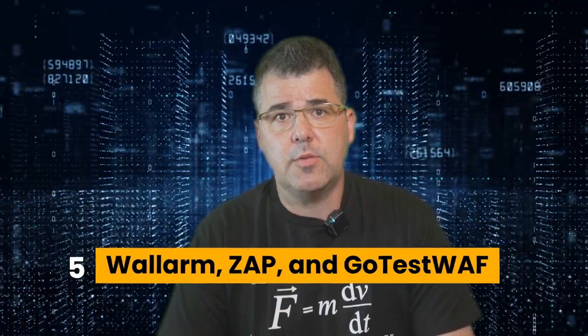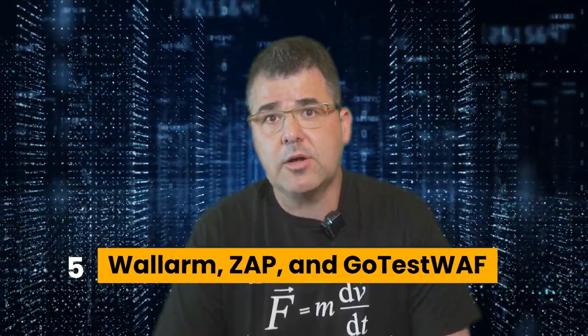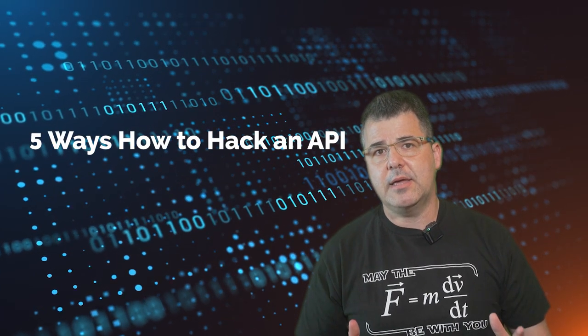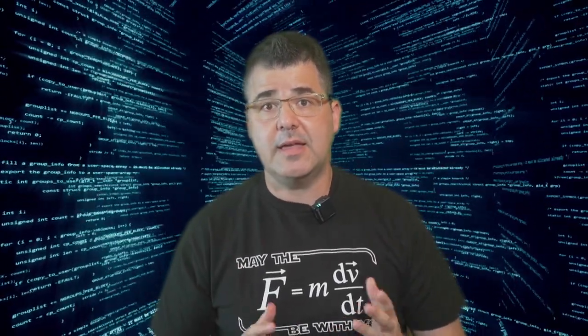The fifth tool is Wallarm. ZAP and GoTestWAF are other popular and easy-to-use tools to scan for API security vulnerabilities. So five ways how to hack an API: using various tools and techniques, hackers can find hidden API vulnerabilities that may be difficult to find using traditional methods. API hacking can help uncover hidden security flaws that attackers could exploit.